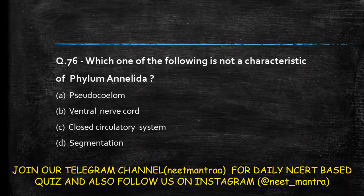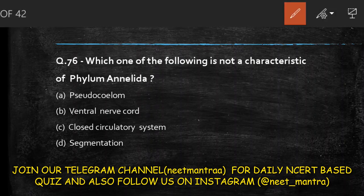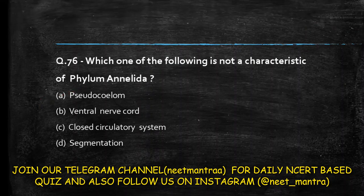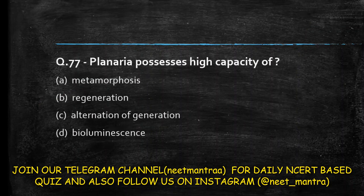Next question: which one of the following is not a characteristic of phylum Annelida? Options are pseudocoelom, ventral nerve cord, closed circulatory system, segmentation. Options B, C, and D are all found in Annelida. But Annelida are coelomates, not pseudocoelomates. So the answer is option A: pseudocoelom.